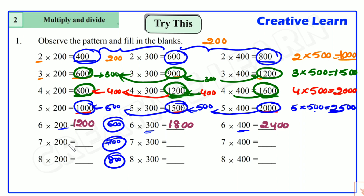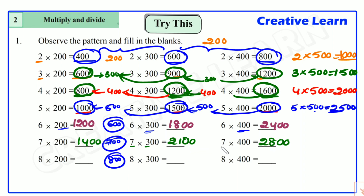Seven into two hundred: seven twos are fourteen, two zeros common — fourteen hundred. Seven into three hundred: difference is seven hundred, so fourteen hundred plus seven hundred is two thousand one hundred. Check: seven threes are twenty-one, two zeros common. Seven into four hundred: two thousand one hundred plus seven hundred is two thousand eight hundred. Check: seven fours are twenty-eight, two zeros common.